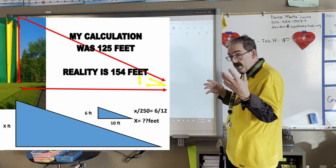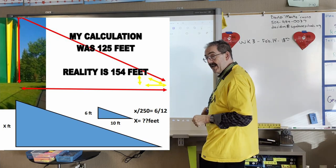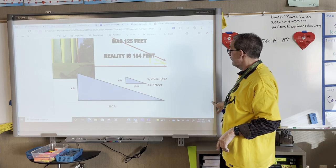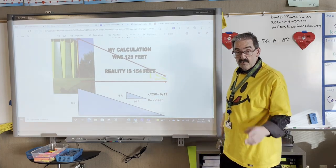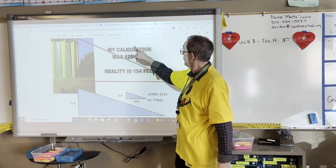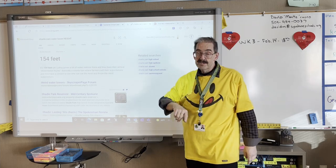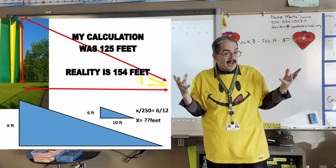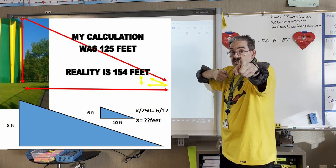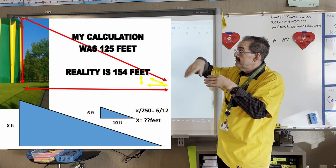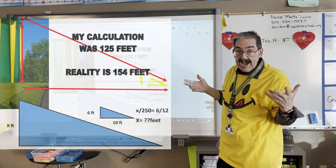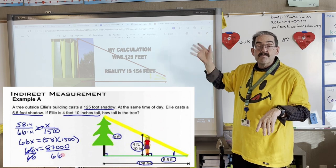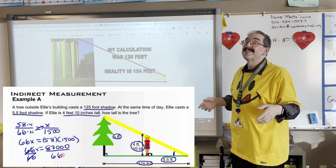Because of similarity: six goes to 10 as x goes to 250. I come up with 125 feet. The water tower is 125 feet tall — over 12 stories. But in reality, according to the internet, the Shadle Park water tower is 154 feet tall. Hopefully you enjoyed that and you're getting a kick out of this real-world math. My challenge to you: go out to your yard, find a tree, the basketball hoop, the height of the roof on your house — do some real-world calculations and bring them to the classroom. Thanks for participating. It's February, spring is on the way. See you in the classroom.